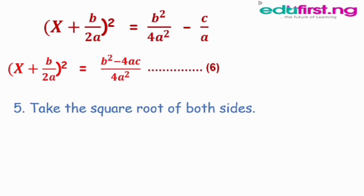Now we rearrange equation five to get equation six. For the right hand side, the denominators are 4a squared and a. Using LCM: a can divide into 4a squared, and 4 can divide into itself, so the LCM is 4a squared. Therefore equation six has a combined denominator of 4a squared.